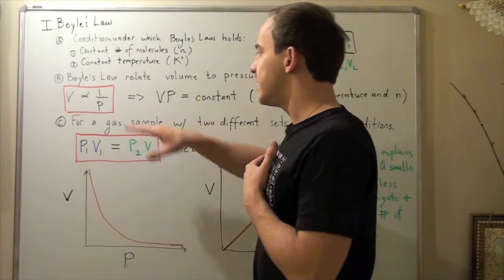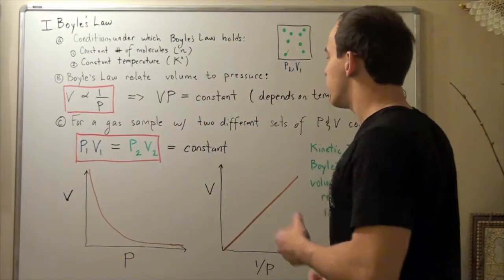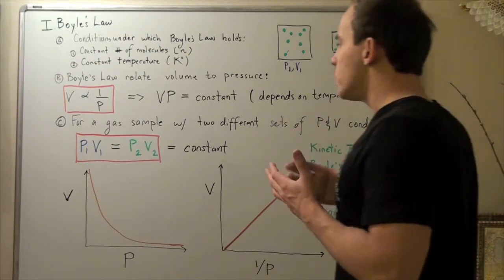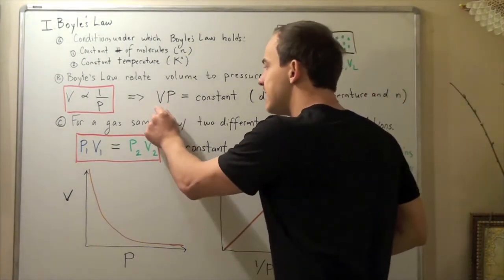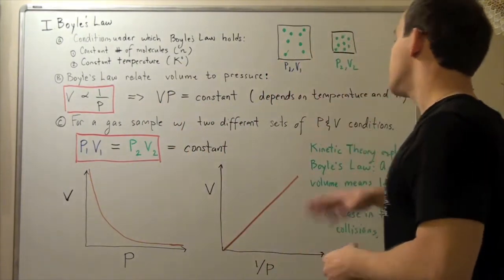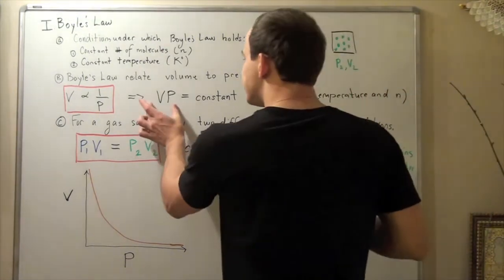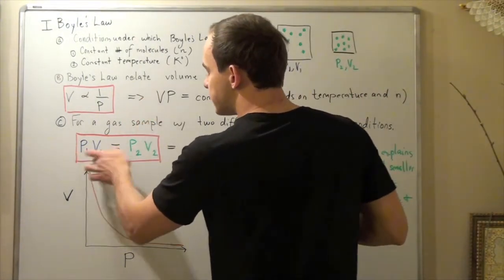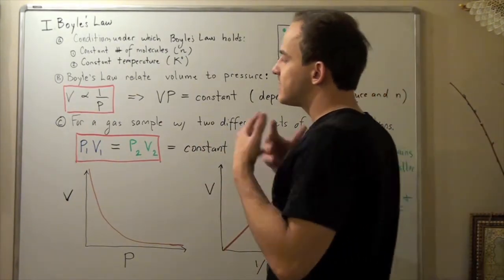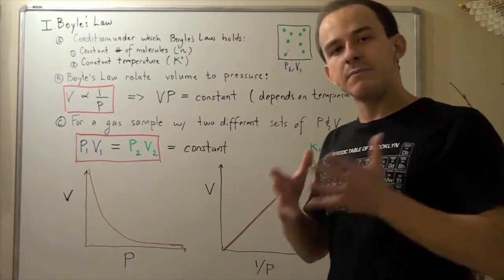Well this equation can be rearranged in this format if we're dealing with two different sets of conditions. Notice that P times V will always give you a constant when you're talking about the same temperature and the same number of moles. So if I have one set of conditions, P1 times V1, that will give me a constant.